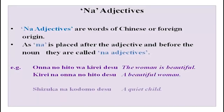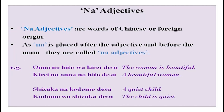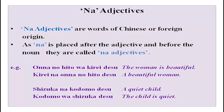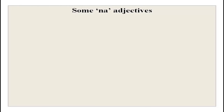'Shizuka na kodomo desu' — he is a quiet child. 'Kodomo wa shizuka desu' — the child is quiet at the moment. But 'shizuka na kodomo desu' means he is generally a very quiet child. All adjectives tell you more about a noun. Now, some na adjectives for you — you can repeat after me.